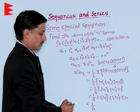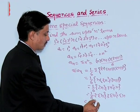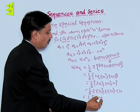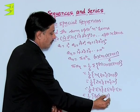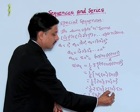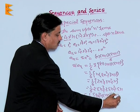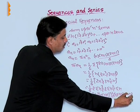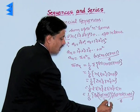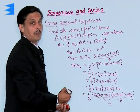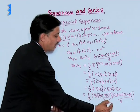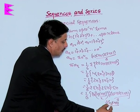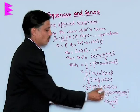Now we conclude it like this: that is 1 upon 6 times 2 times sigma n cube, means n into n plus 1 upon 2 whole square, plus sigma n square, means n into n plus 1 into 2n plus 1 upon 6, and finally plus sigma n, means n into n plus 1 upon 2.